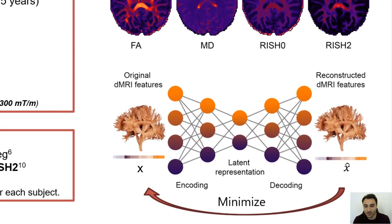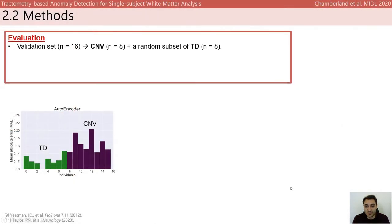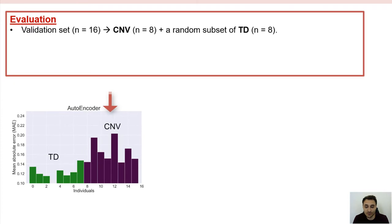Here, we train the deep autoencoder to learn what healthy microstructural properties look like by minimizing the reconstruction error. Then, given a new input, we can use the reconstruction error as a distance metric that quantifies the degree of deviation of that subject with respect to the group representation. Since we want to train on healthy controls data only, a bootstrap approach was implemented to draw random samples of equal sizes to each group to form the validation set.